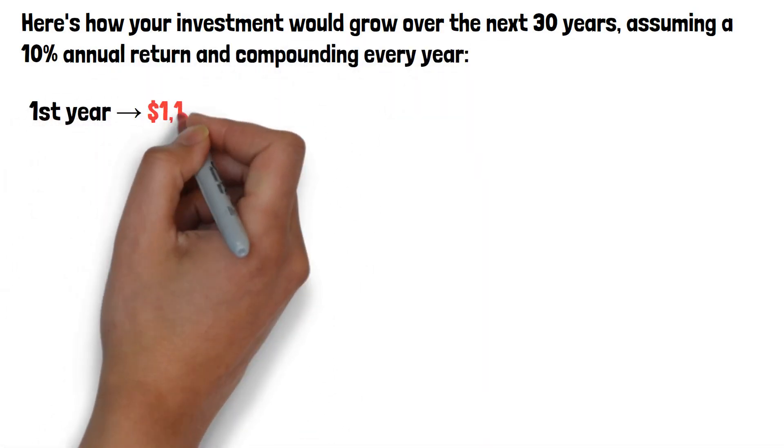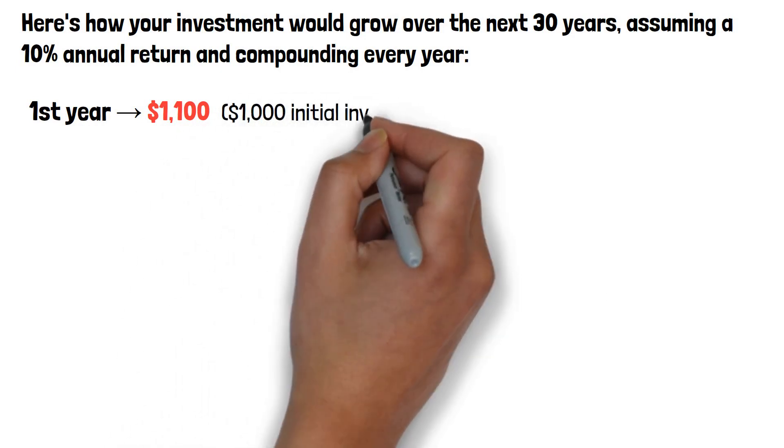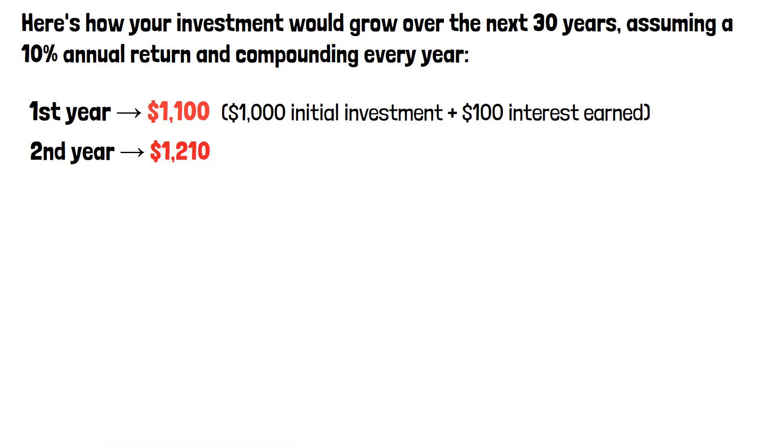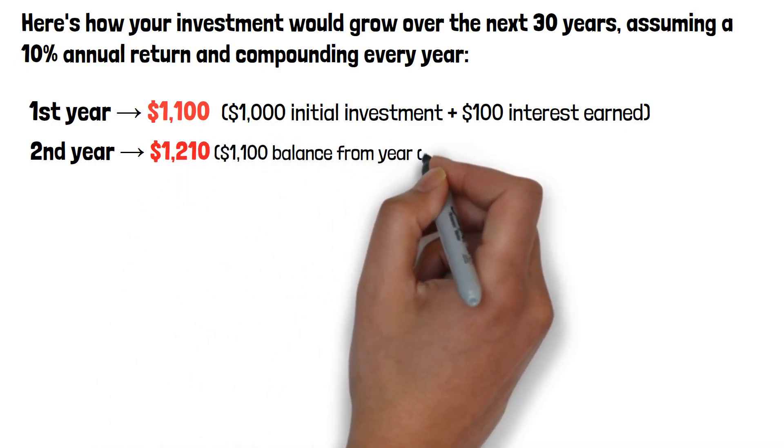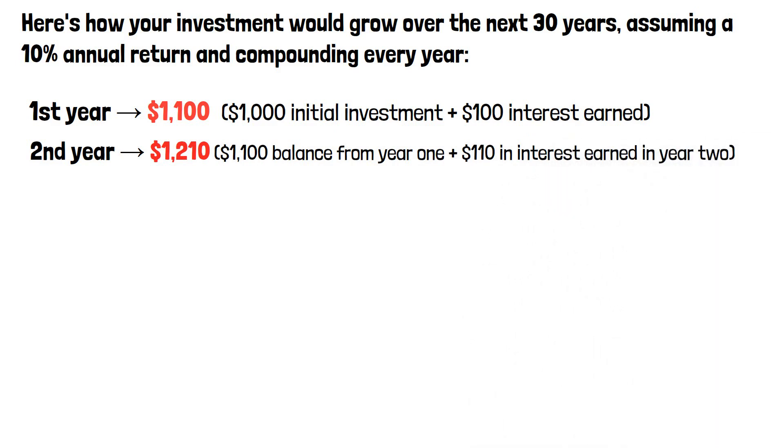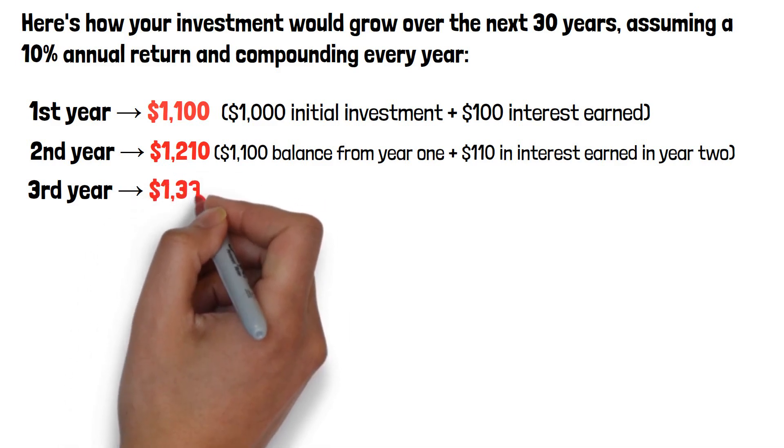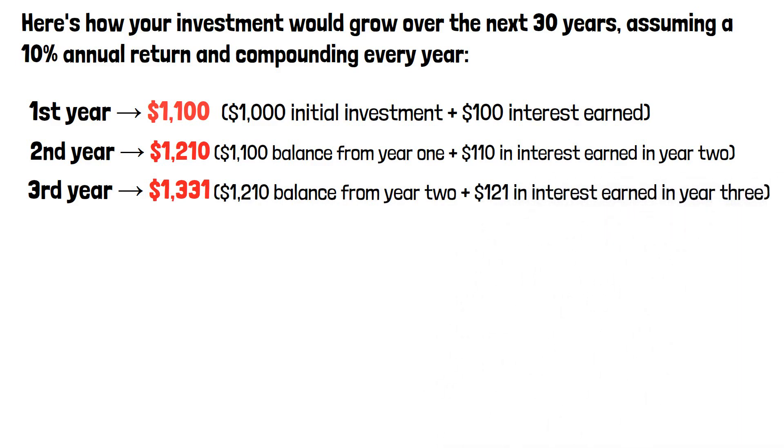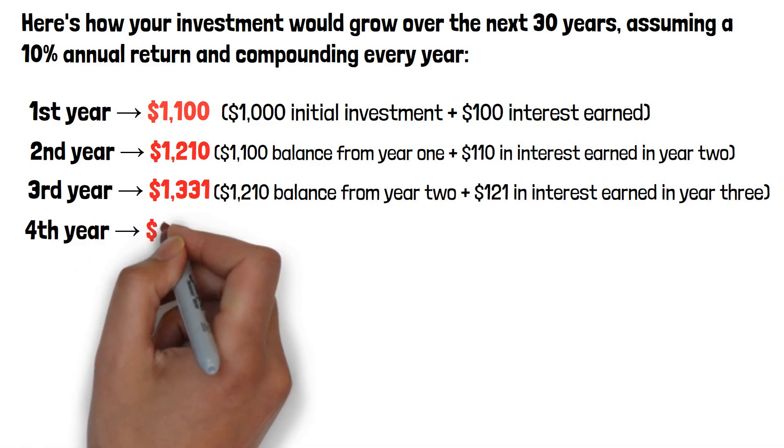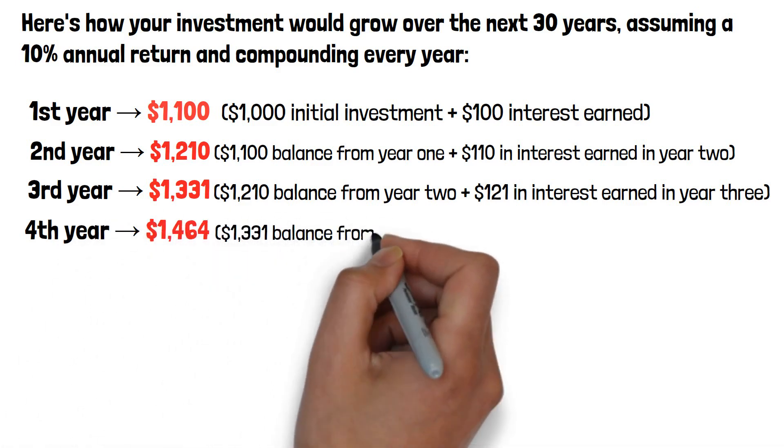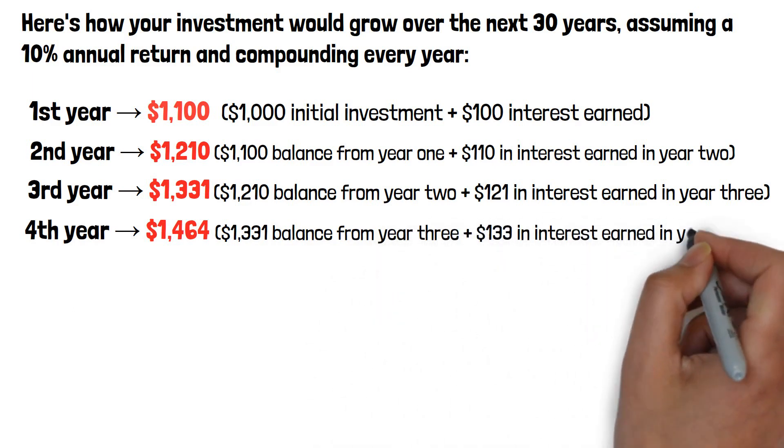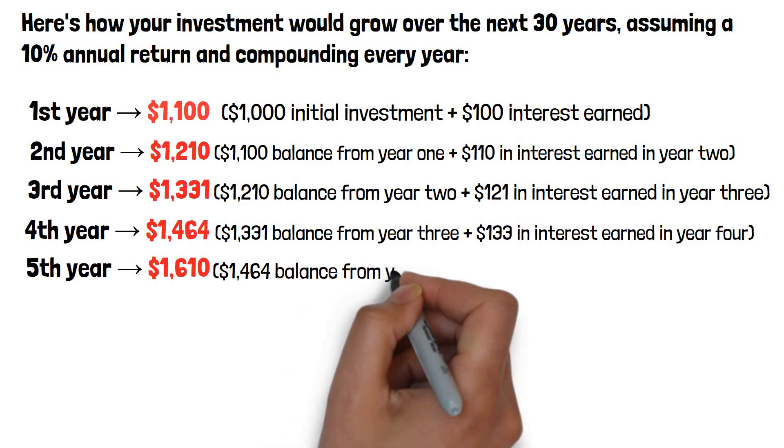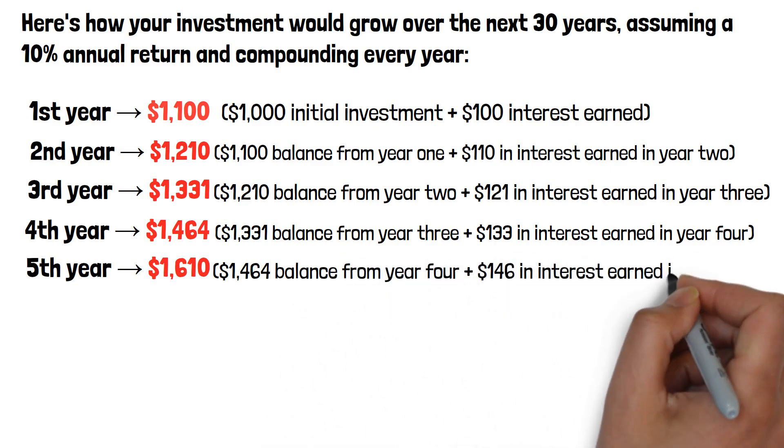After the first year, your investment would be worth $1,100 - $1,000 initial investment plus $100 interest earned. After the second year, your investment would be worth $1,210 - $1,100 balance from year 1 and $110 in interest earned in year 2. After the third year, your investment would be worth $1,331 - $1,210 balance from year 2 plus $121 in interest earned in year 3. After the fourth year, your investment would be worth $1,464 - $1,331 balance from year 3 plus $133 in interest earned in year 4. After the fifth year, your investment would be worth $1,610 - $1,464 balance from year 4 plus $146 in interest earned in year 5.